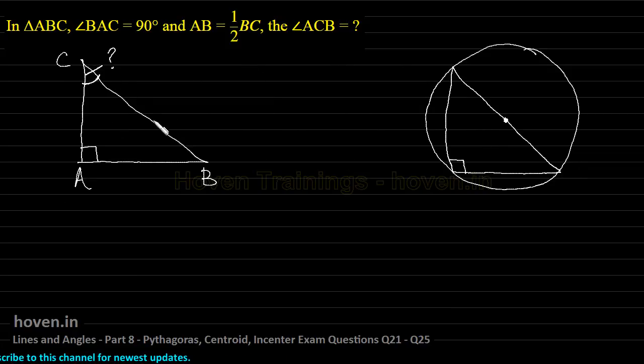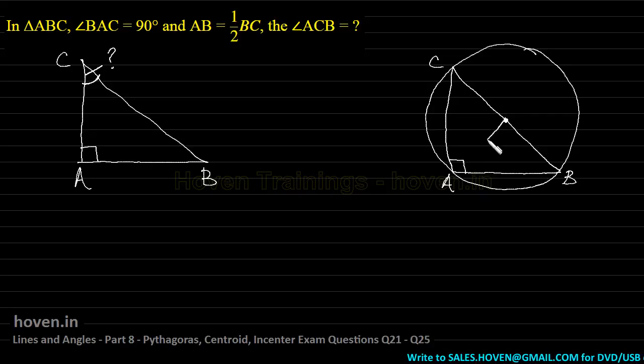We can think this of as a diameter and this as an angle on the semicircle. So if this is the diameter and let us put the labels also CAB. And let us join this to this.